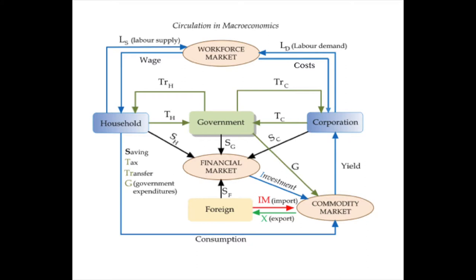Imports are income leakages that send income to foreign nations as we purchase their products, but exports add income back as an income injection to counter the leakage of imports. If we take the factor wage given to labor as income, multiply by all working households, and add government expenditures, investment, and the net of exports minus imports, then consumption plus government spending plus investment plus the difference between exports and imports should account for all income made in the economy.